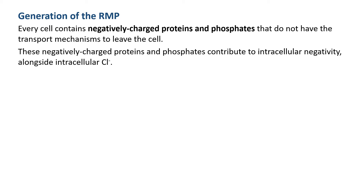Every cell contains negatively charged proteins and phosphates. Many proteins carry a negative charge, and phosphates also carry a negative charge with plenty of free phosphates floating around in the cytosol. They have no transport mechanisms, so they're stuck within the cell carrying a negative charge. We also have intracellular chlorine, which is an anion carrying a negative charge. These negatively charged proteins, phosphates, and chlorine contribute to intracellular negativity — so the inside of the cell naturally has a negative charge compared to the outside.